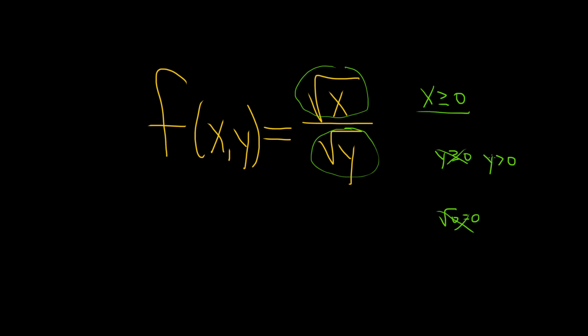Now that we have these conditions on x and y, we can express our domain in set notation. It's the set of all ordered pairs because it's two variables, so it'll be (x, y). That's how you read this.